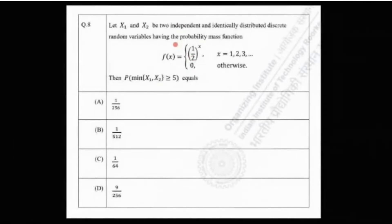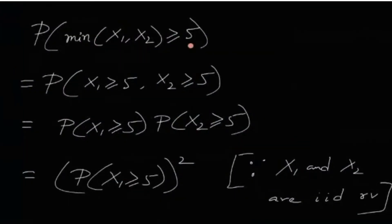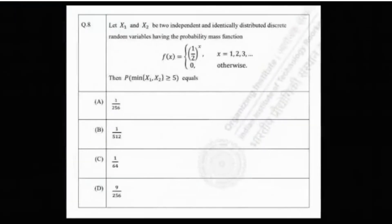As long as you know the meaning of independent and identically distributed random variables, and as long as you figure out that min(X1, X2) ≥ 5 means both of them are greater than or equal to 5 — which follows from basic logic — you can solve this problem easily. There you have it, the solution. Do like, share, and subscribe to the channel for more exciting problems. See you next time!